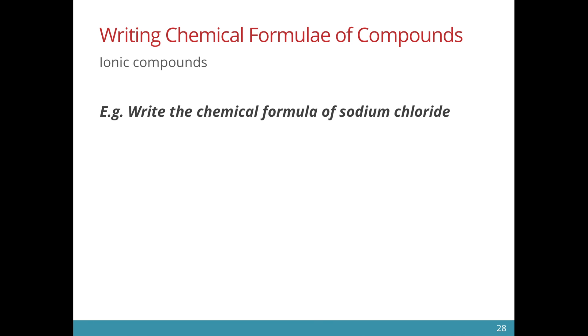Let's look at the first example: sodium chloride. Sodium chloride is an ionic compound, hence it is made of the sodium ion and the chloride ion.